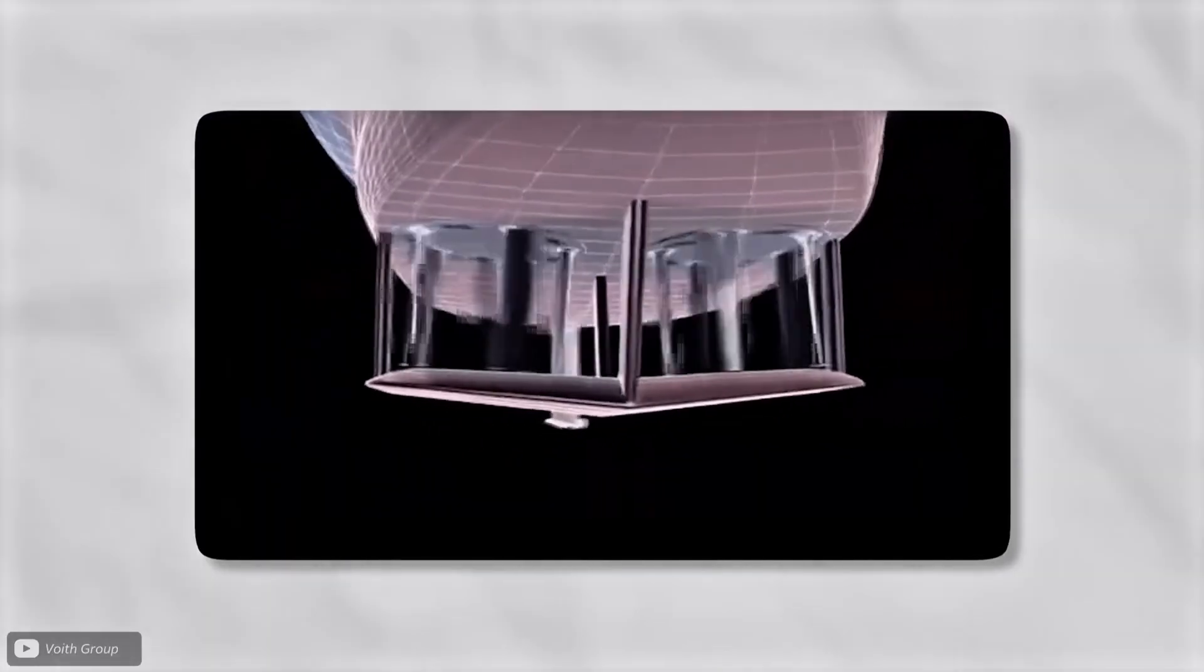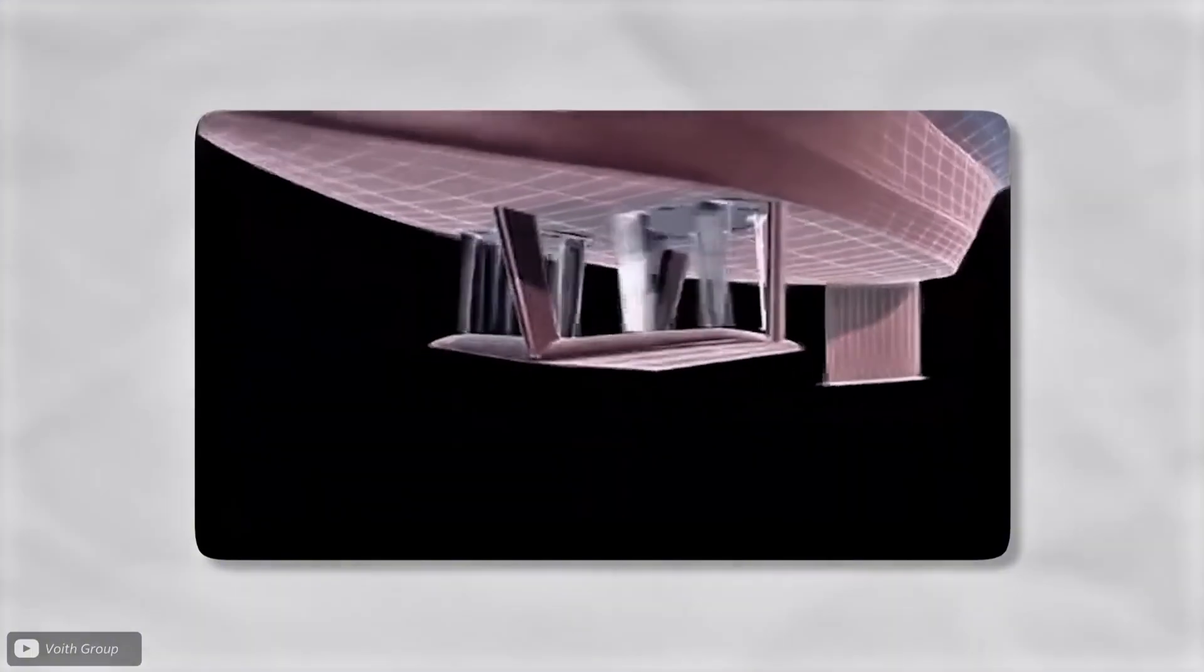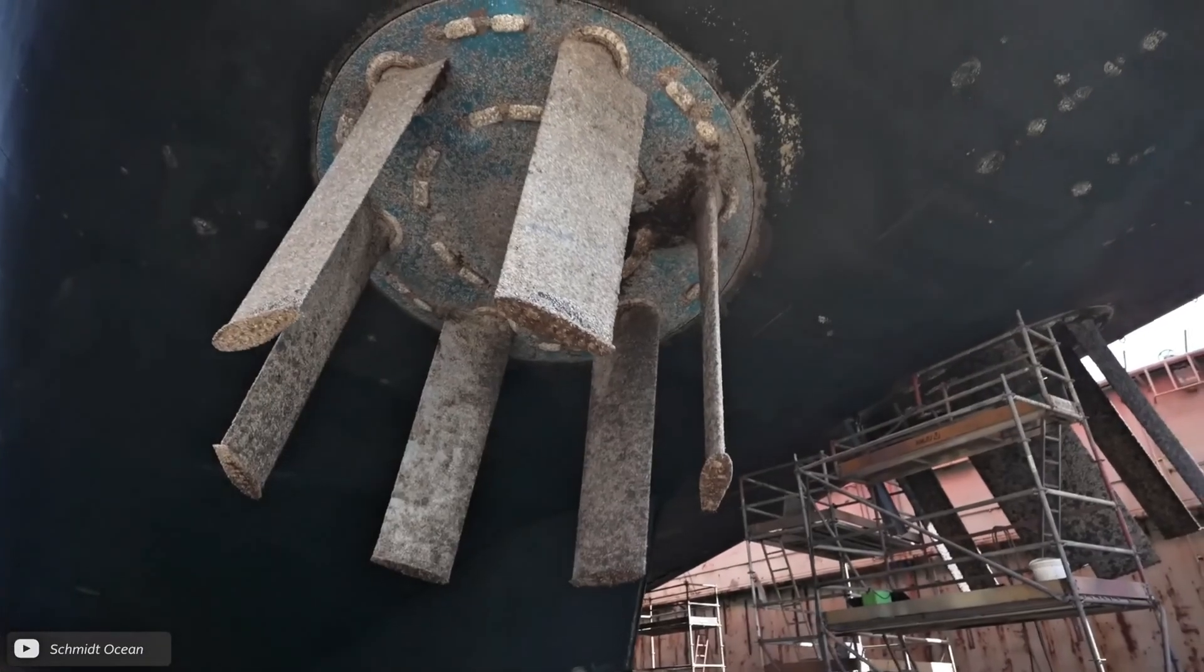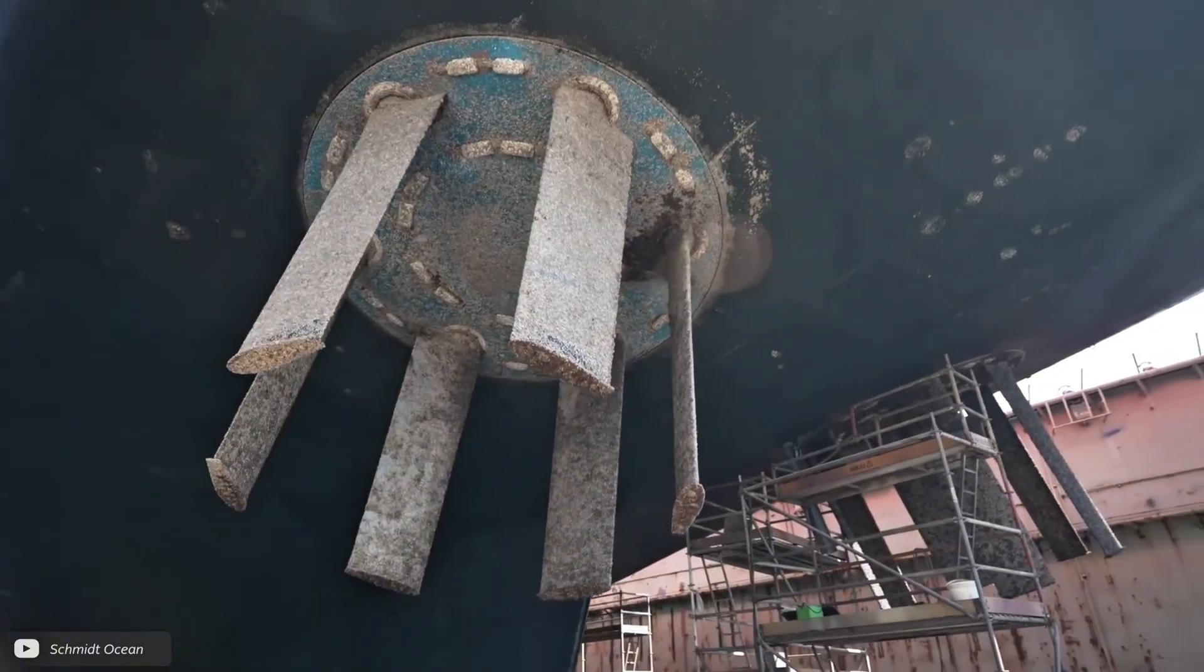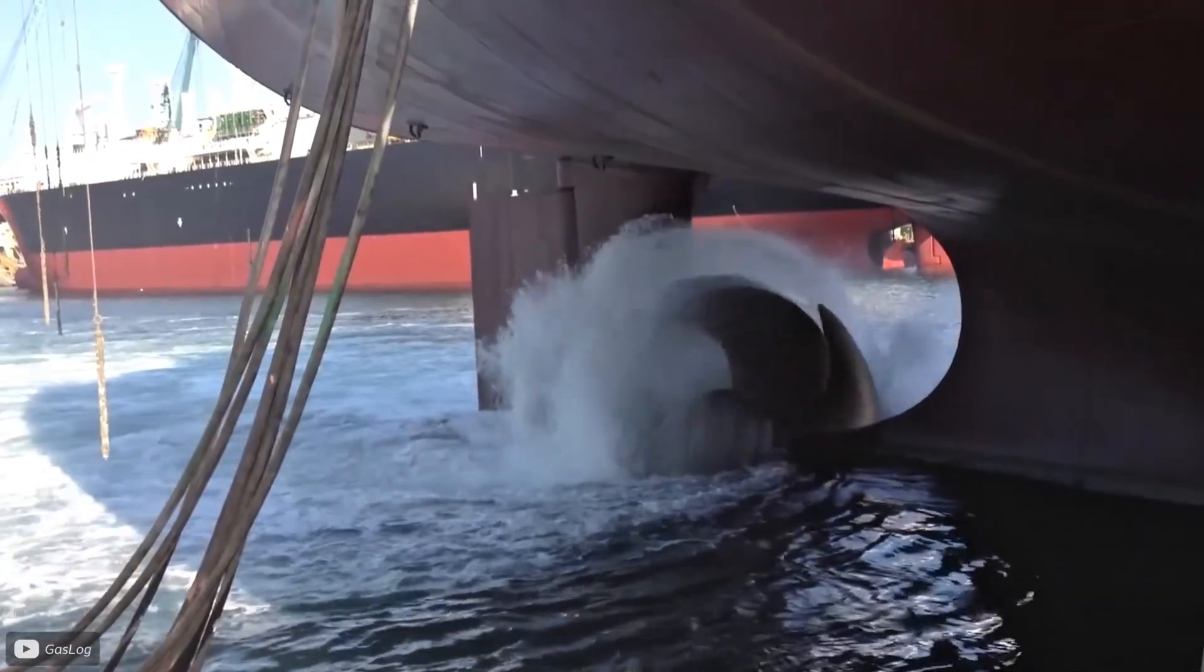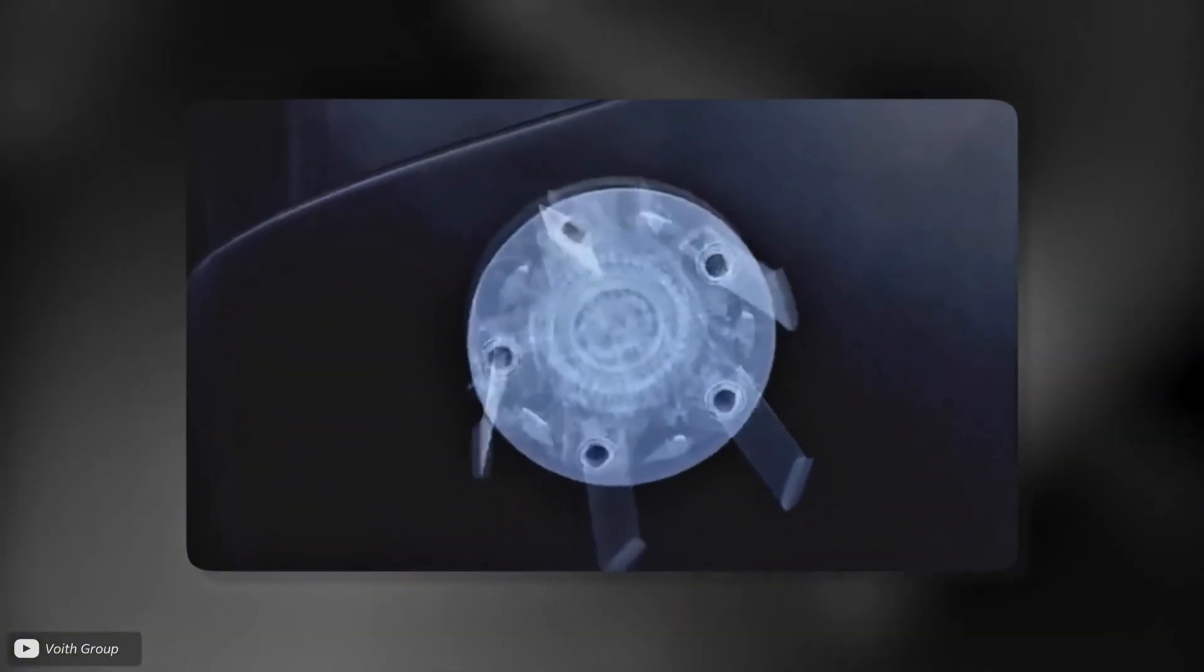By the 1930s, a German company called Voith had perfected the first working cycloidal propeller for ships. They mounted a spinning disc under test boats in Venice's canals, with vertical blades sticking up like drumsticks. The results were magical. The boats could move forward, backward, or even side to side without turning a rudder. It was like giving a boat a pair of invisible arms to pull itself around.